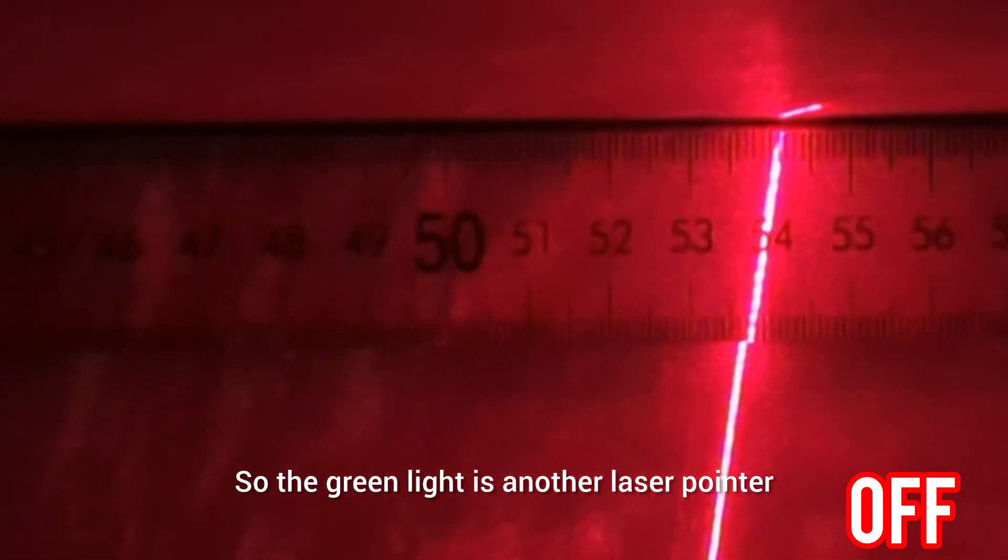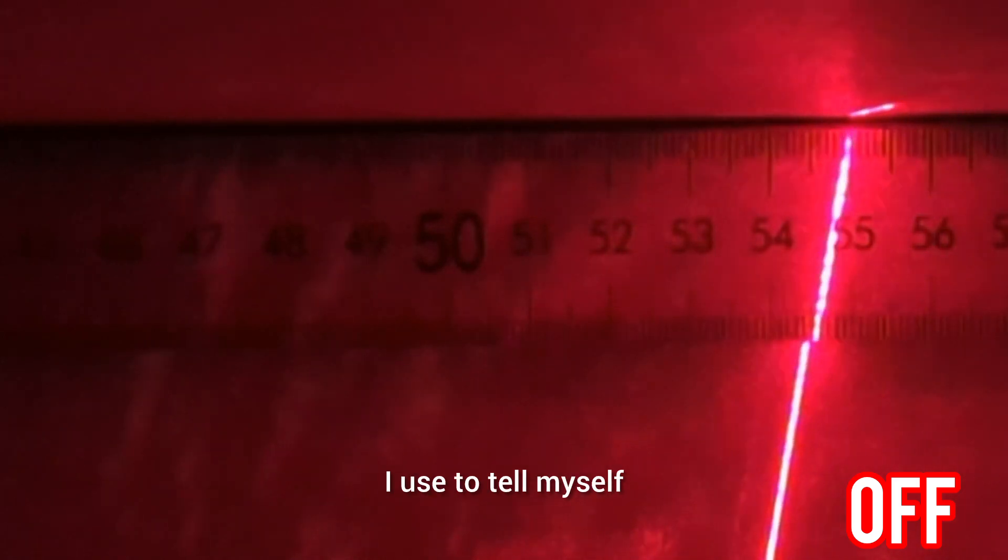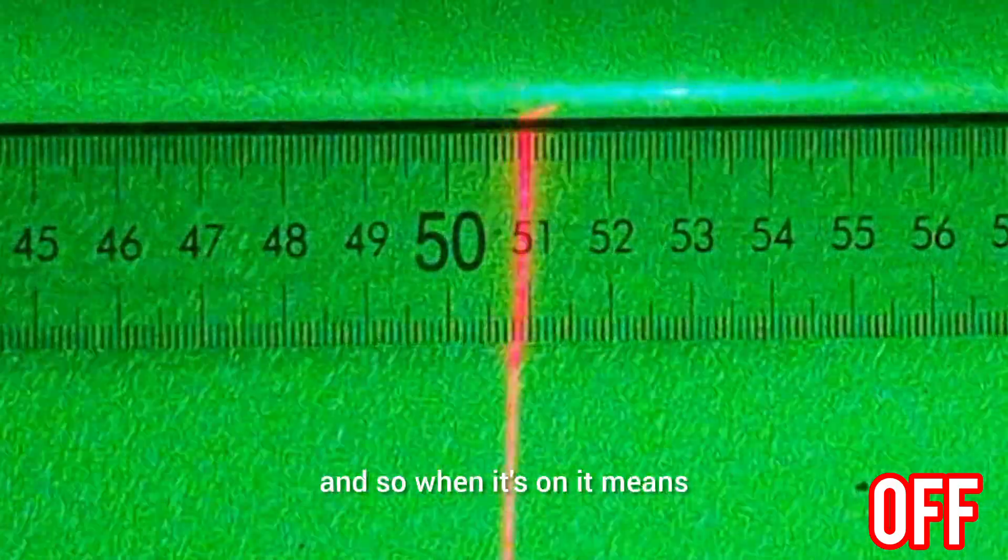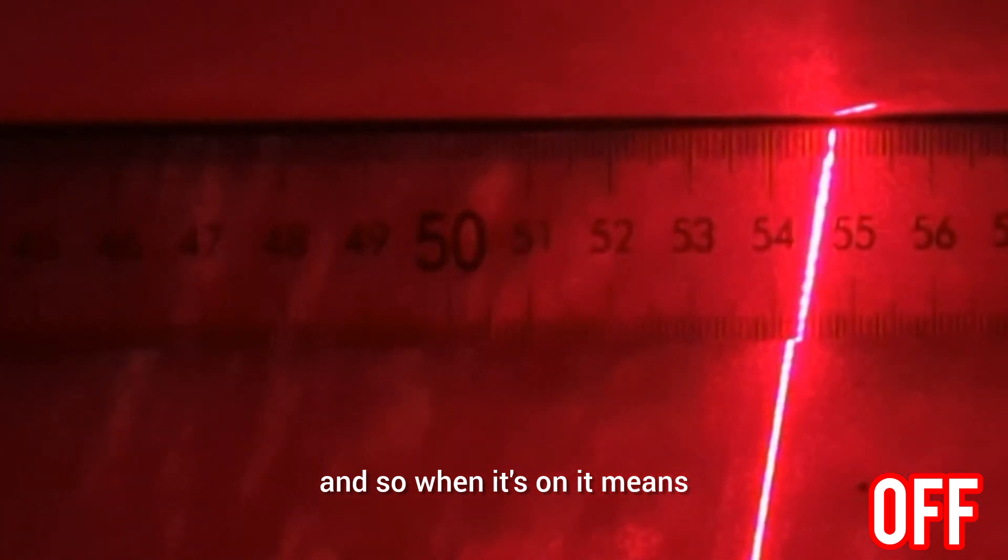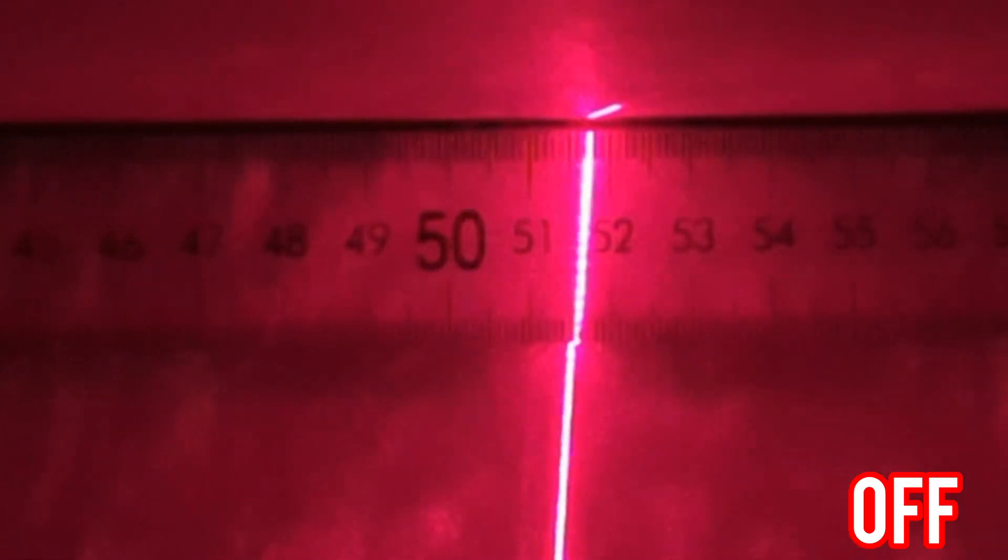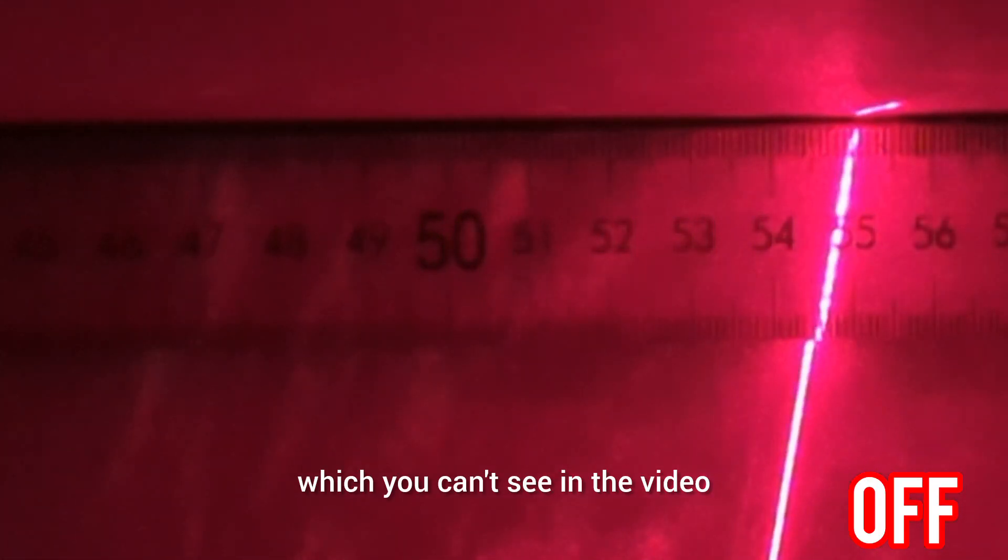So the green light is another laser pointer I use to tell myself when I'm turning the laser on and so when it's on it means red laser that I used before is going through the coil which you can't see in the video.